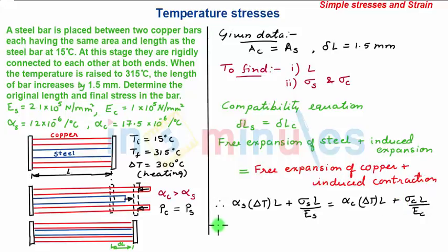Upon substituting the values, we have alpha_S is 2 times 10^-6 times delta T is 300. The L terms will cancel. So we have plus sigma_S upon E_S, which is 2.1 times 10^5 N/mm².